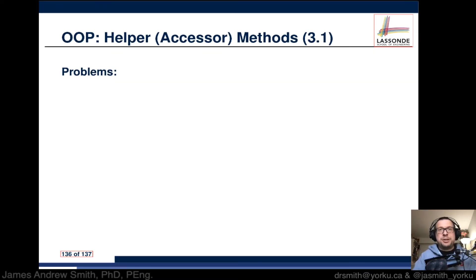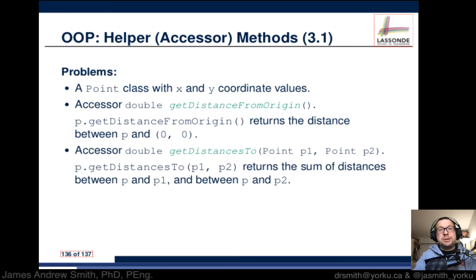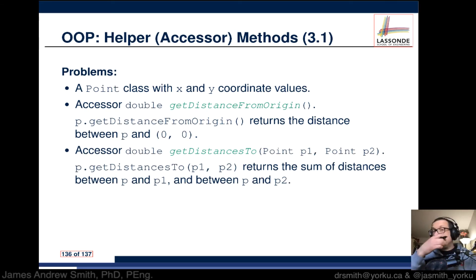Next up, let's take a look at another example. We have a Point class with x and y coordinate values. We have an accessor, get distance from origin as a method. We use it like this and we return the distance between some point p and the origin zero and zero, so x equals zero and y is equal to zero.